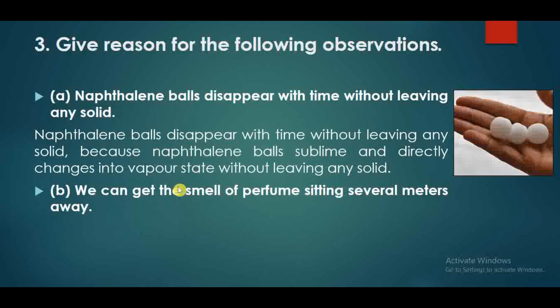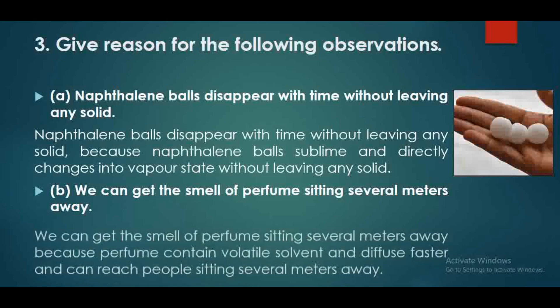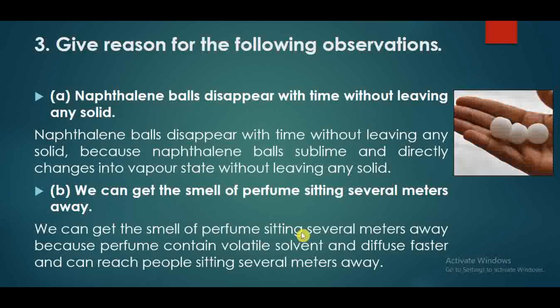We can get the smell of perfume sitting several meters away. Because perfume contains volatile substances. These volatile components vaporize and diffuse fast, spreading through the air. Their particles can reach people sitting several meters away. Perfume contains volatile solids and liquids that diffuse rapidly through the medium.